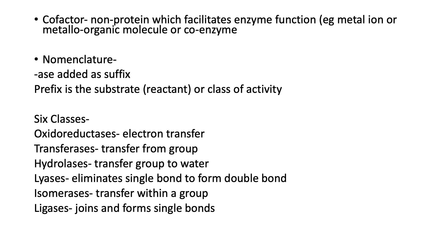Regarding enzyme nomenclature, we put the suffix -ase at the end of the name of the enzyme. The prefix is usually the substrate, which is the reactant, or some sort of class of activity. By definition, there are six classes, which are either part of the nomenclature or they are understood as a process of the reaction.